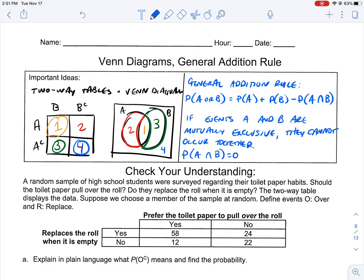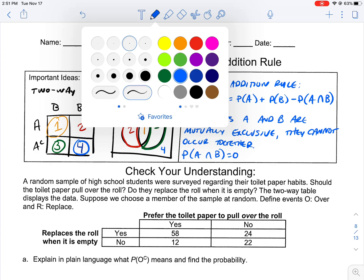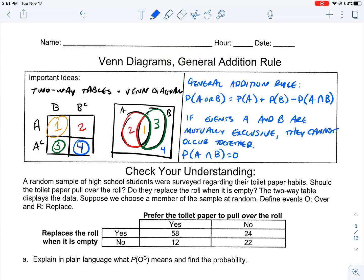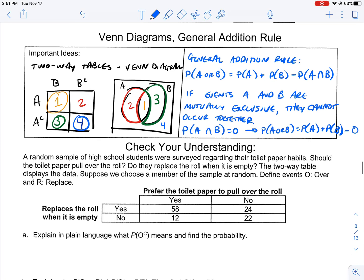If they're mutually exclusive, the probability of A and B together is equal to zero. The general addition rule for a mutually exclusive event would be the probability of A or B equals the probability of A plus the probability of B. You're still subtracting the probability of A and B, but it's zero because they're mutually exclusive.